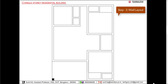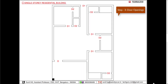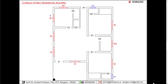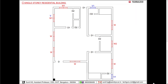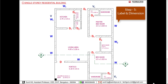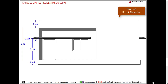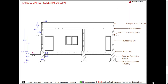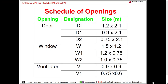Second step: we need to draw the wall layout. Third step: we need to show the door openings. Fourth step: we need to show the window and ventilator openings. Fifth step: dimensioning and labeling. Once the plan is ready, we will go with the front elevation, then followed by the sectional elevation. At last, we are going to prepare the schedule of openings.